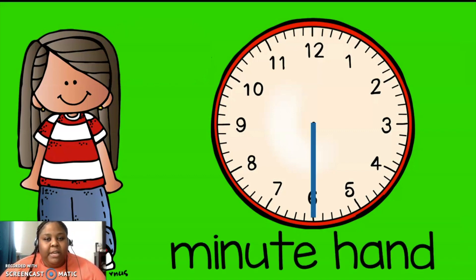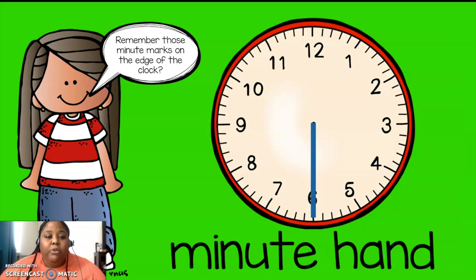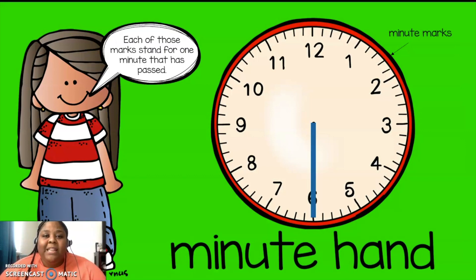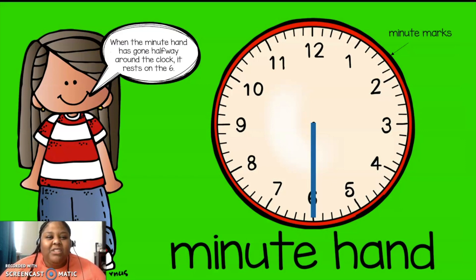Remember, just like Ms. Seb said earlier, the blue hand is the minute hand. Remember, those minute marks on the edge of the clock? Those little marks are called the minute marks. Each of those marks stand for one minute that has passed. When the minute hand has gone halfway around the clock, it rests on the 6.